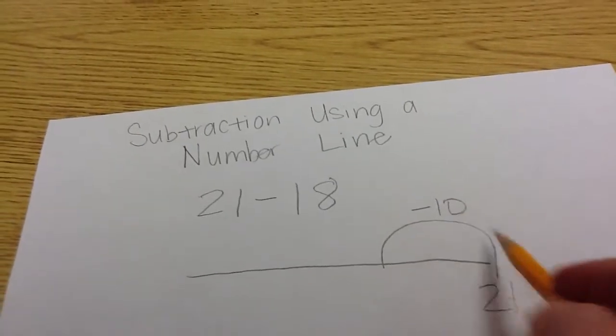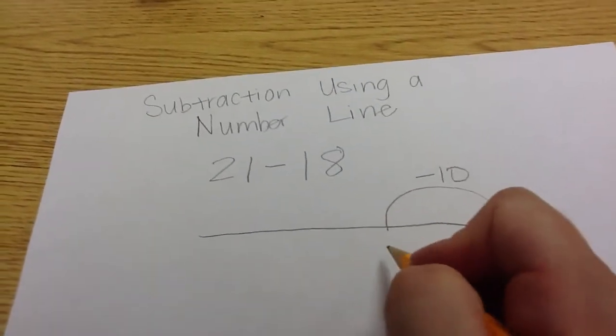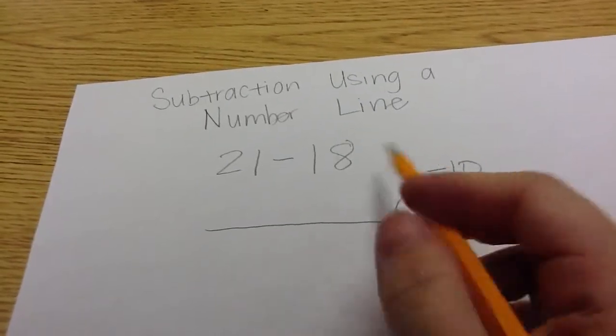Multiples of 10 are very simple to subtract. 21 minus 10 would be 11. Excellent job.